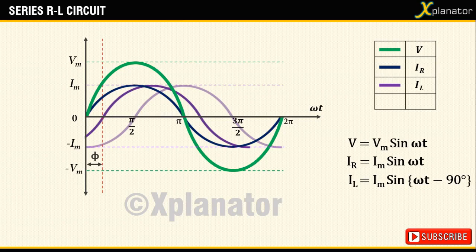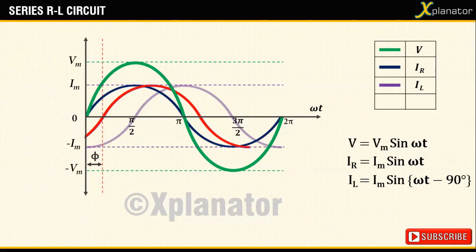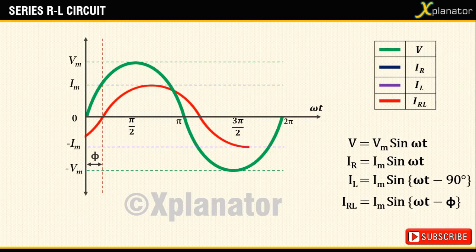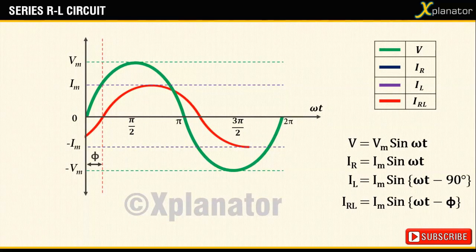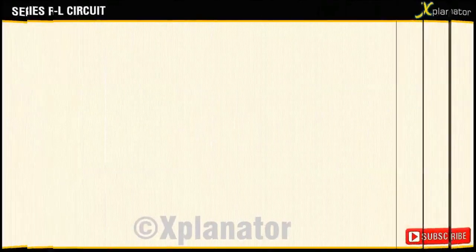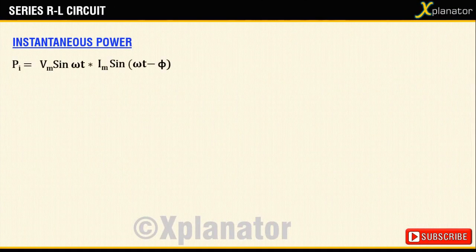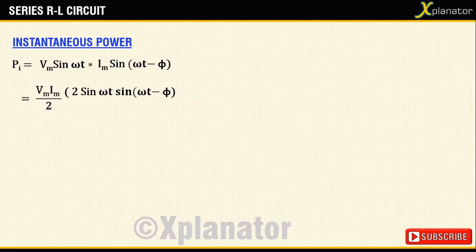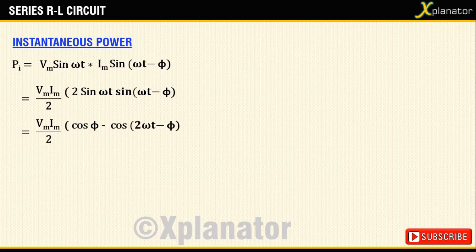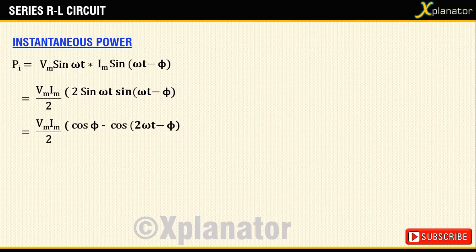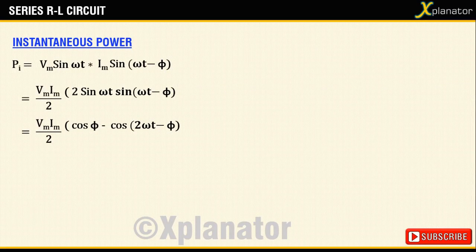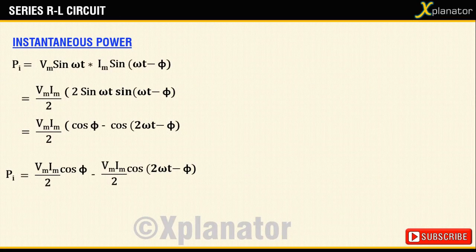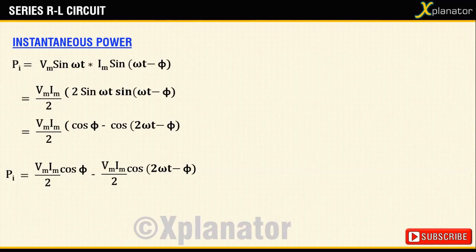With voltage and current equations and the plots, it is possible to derive the power equation and draw the power plot as well. For instantaneous power Pi, which equals V times I, substitute the values and simplify using the trigonometric identities. You will get p equals (Vm Im by 2) cos phi minus cos (2 omega t minus phi). The terms may be separated and written as (Vm Im by 2) cos phi minus (Vm Im by 2) cos (2 omega t minus phi).